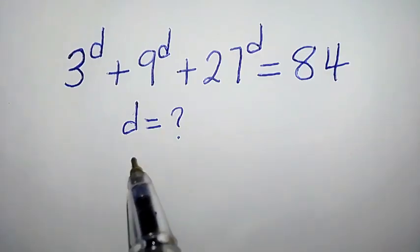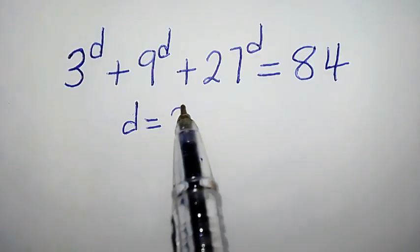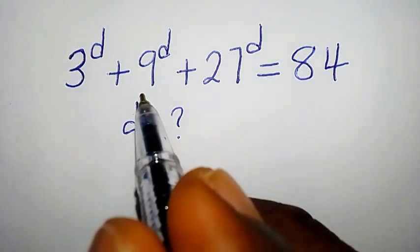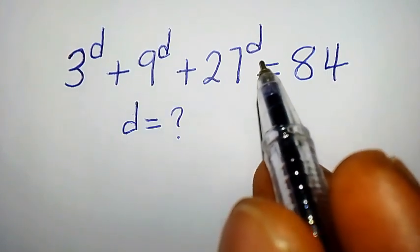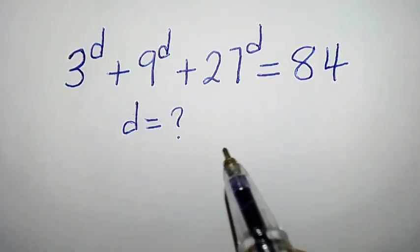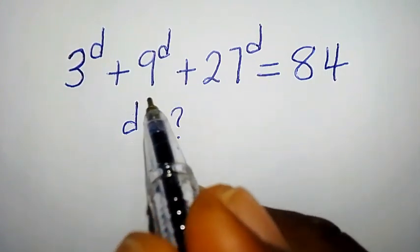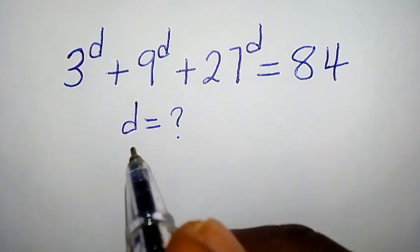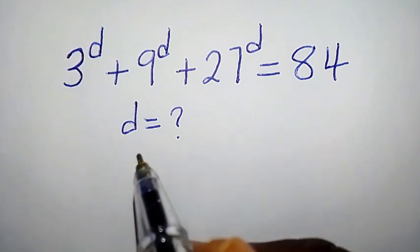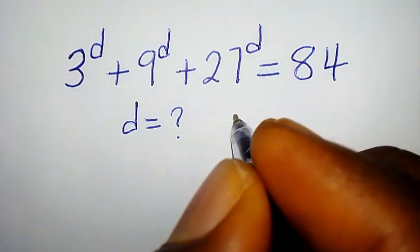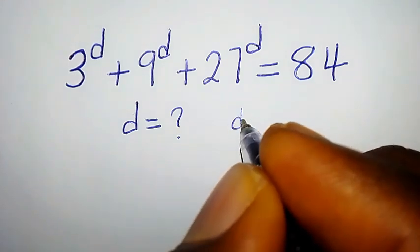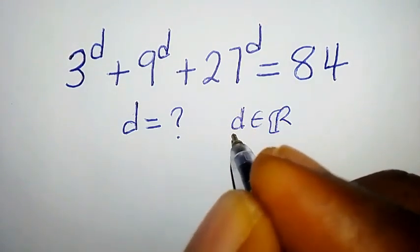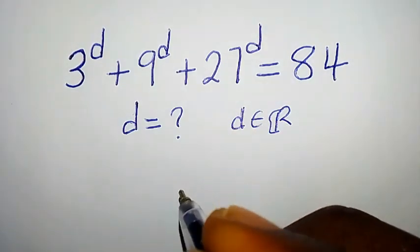Hello, welcome. Here we have a pretty equation to solve: 3 to the power of d plus 9 to the power of d plus 27 to the power of d equals 84. How do we solve for d? Before we continue with the solution, we have a condition: d belongs to the set of real numbers.